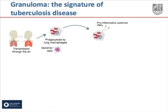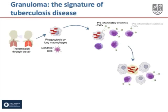The macrophages release pro-inflammatory cytokines, which leads to the recruitment of mononuclear cells from nearby blood vessels. These cells release more pro-inflammatory cytokines. Uninfected macrophages arriving at the infection site phagocytose dying infected macrophages, increasing the number of infected cells.